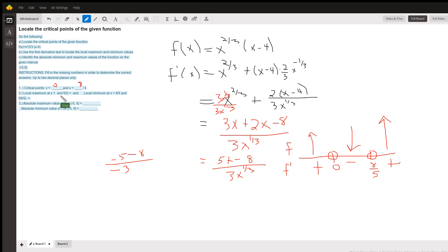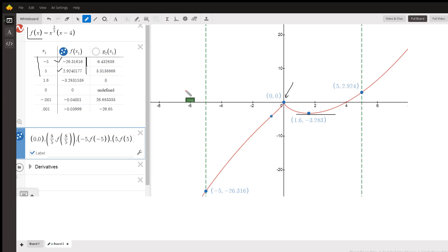Local maximum at x equals zero and f of zero equals zero. And a local minimum at x equals eight-fifths and f of eight-fifths. Well, we can go to here to see what f of eight-fifths is right here, negative 3.283.